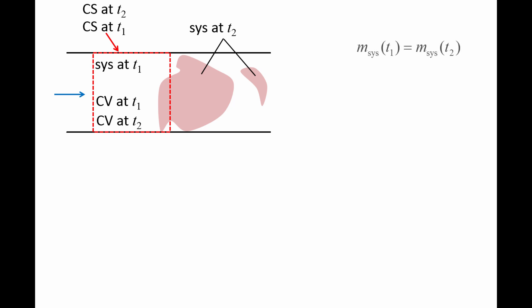If we keep track of the pink mass from time t1 to time t2 — that is, we are taking the system point of view — the mass at t1 equals the mass at t2. Another way to express this mathematically is to say the time rate of change of the mass in the system is zero; that is, dm/dt equals zero.